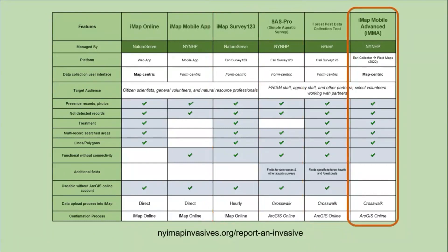Our last and most advanced tool is called IMAP Mobile Advanced — it's within Esri's Field Maps app, formerly called Collector. It allows you to do presence, not-detected, treatments, and polygons. One key thing is that it's map-centric: you can actually see the data you're submitting on the map while you're in the field, rather than submitting it in a form and seeing it on the map online later. This is mostly used by professional partners because it requires GIS experience, there's an ArcGIS Online data review process, and there's generally more of a learning curve than with Survey 123.